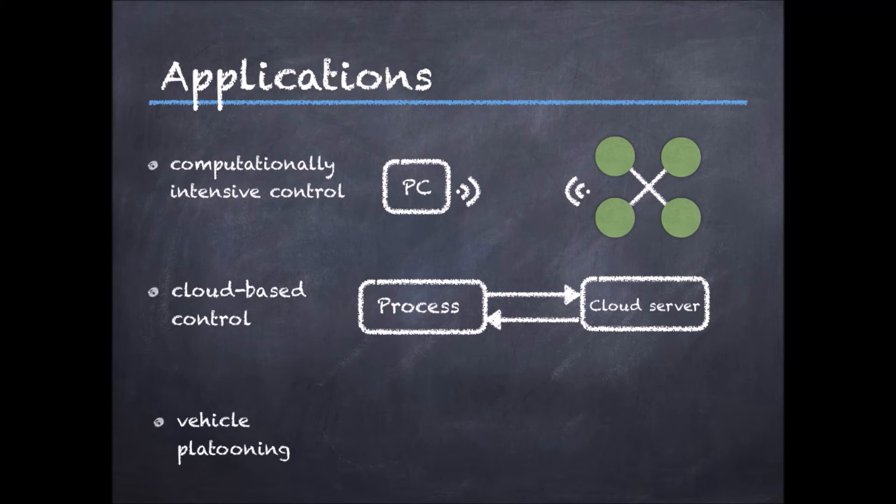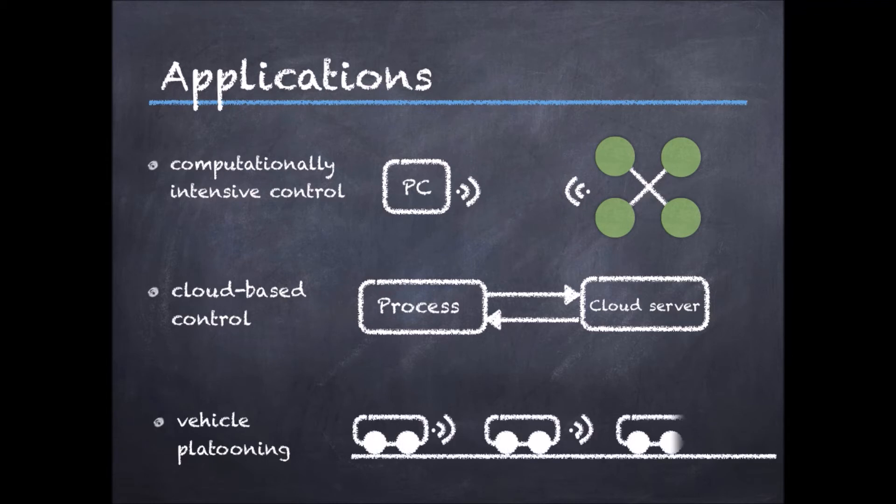As a third application, I will mention vehicle platooning, and it is of a rather different nature. Here, the communication is actually used to ensure cooperation between the vehicles in such a way that they keep a certain distance from each other so that they reduce the fuel consumption due to air drag.